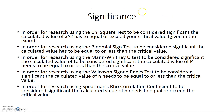Now let's look at significance quickly. In order for research using the chi-squared test to be considered significant, the calculated value of x-squared has to equal or exceed the critical value given in the exam. For the binomial sign test, the calculated value has to be equal to or less than the critical value. For the Mann-Whitney U test to be considered significant, the calculated value of p has to be equal to or less than the critical value. For the Wilcoxon signed rank test, the calculated value of n needs to be equal to or less than the critical value.